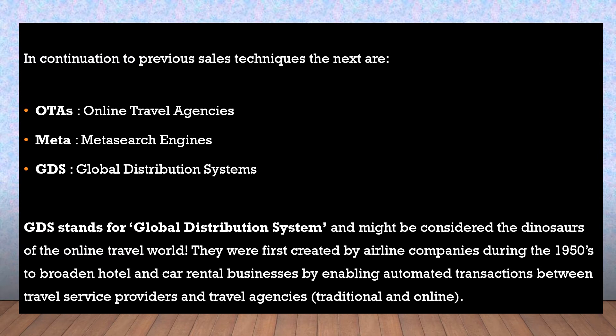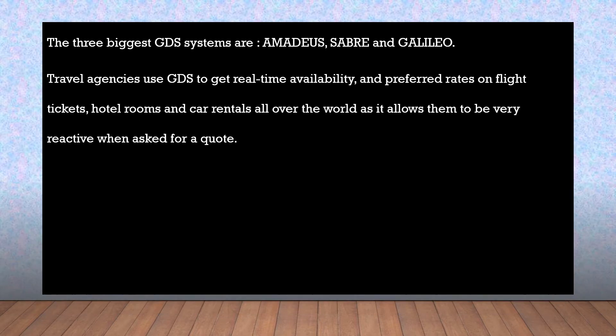GDS were first created by airline companies during the 1950s to broaden hotel and car rental businesses by enabling automated transactions between travel service providers and travel agencies, traditional and online. The three biggest GDS systems are Amadeus, Sabre, and Galileo.